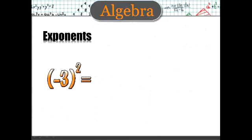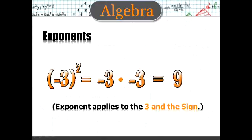However, when we have negative 3 quantity squared, it's going to be negative 3 times negative 3, which is positive 9. Because a negative times a negative is positive. In this case, the exponent applies to the 3 and the sign. It's all inclusive. And it makes a lot of sense, really, when you look at it.